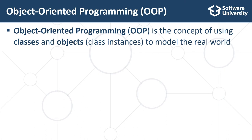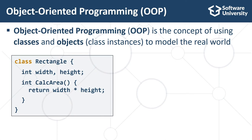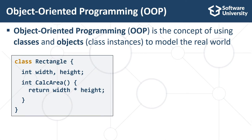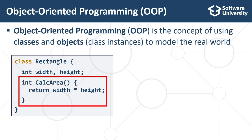In this example, we have a definition of the class Rectangle. It holds data fields, width and height, which are integer values. It defines a method, holding the code to calculate the area of the rectangle.